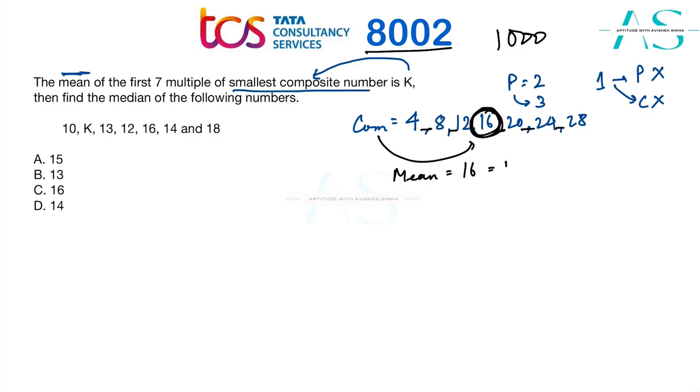Mean is sixteen, which is the value for k. Now we have the value of k as sixteen. Now in order to find the median, as we have discussed earlier, we need to arrange this data in any order.